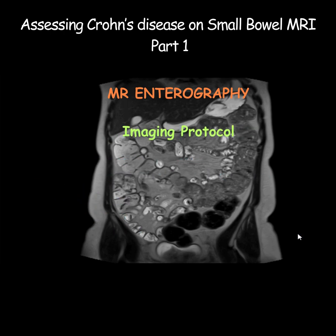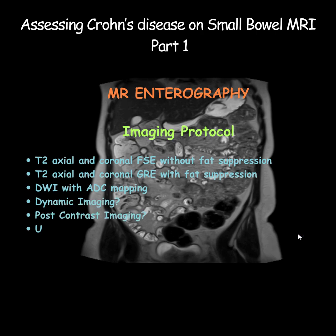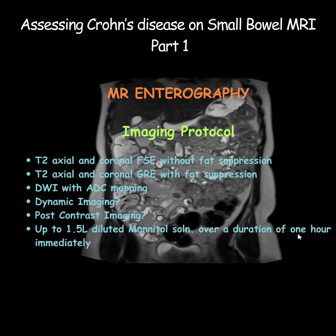Regarding the imaging technique, at our center we perform coronal and axial T2 fast spin echo and gradient echo sequences with and without fat suppression, and we also do axial diffusion weighted imaging. Some centers also include post-contrast imaging, but we don't normally perform it unless there is a specific reason. To ensure that the bowel is adequately distended for accurate assessment, we give mannitol solution about an hour before the scan.